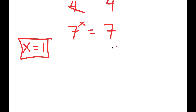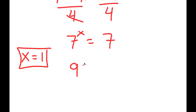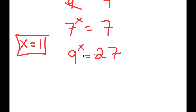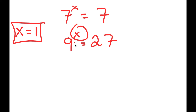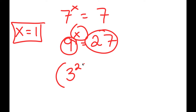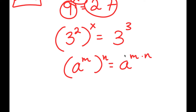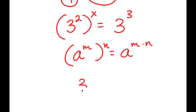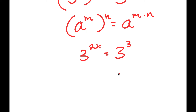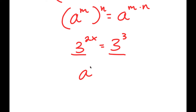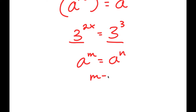However, if this was a problem like 9 to the power of x is equal to 27, we couldn't just guess — x isn't going to be a whole number. So the proper way to do this is to make both sides the same base. 9 is the same thing as 3 squared, so I get 3 squared to the power of x is equal to 27, which is 3 to the power of 3. Using the rule that a to the power of m to the power of n equals a to the power of m times n, I get 3 to the power of 2x is equal to 3 to the power of 3. Now that both sides have the same base, if a to the power of m equals a to the power of n, then m equals n.